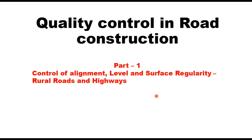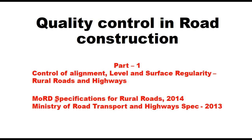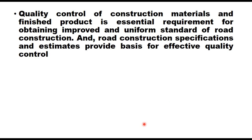Hello friends, in this session we will discuss quality control in road construction. There are several aspects of quality in road construction, and in the first part today we are discussing control of alignment, level, and surface regularity. These are different for rural roads and highways, and therefore the provisions given in Ministry of Rural Development specifications for rural roads 2014 and Ministry of Road Transport and Highway specification for road and bridge works 2013 are discussed in this session.